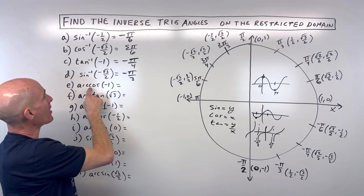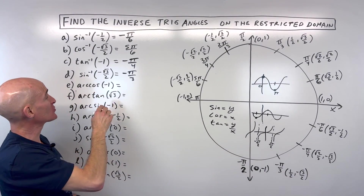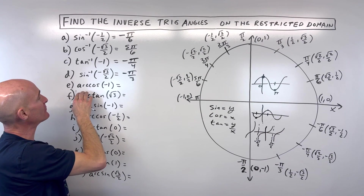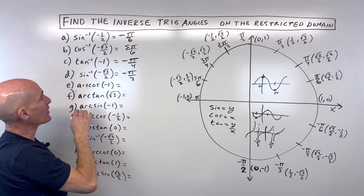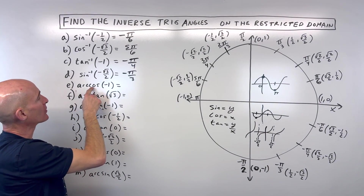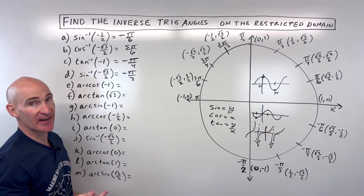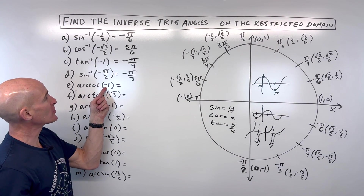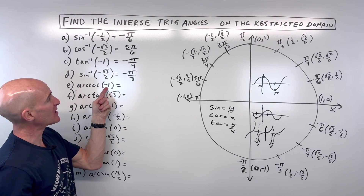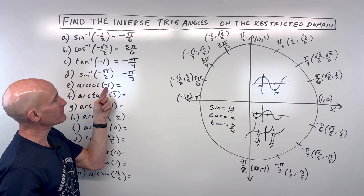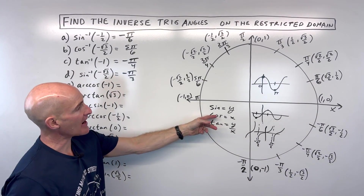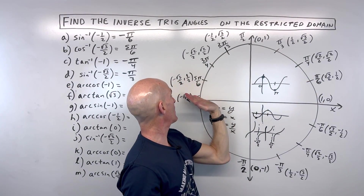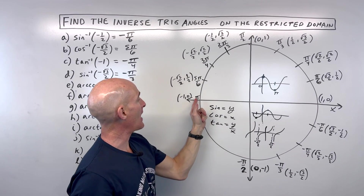For letter E: arc cosine of negative one. Arc cosine is the same as cosine inverse — it's asking cosine of what angle equals negative one. Remember cosine is the x-coordinate. Negative one for the x-coordinate occurs at pi radians.